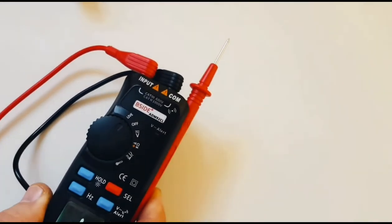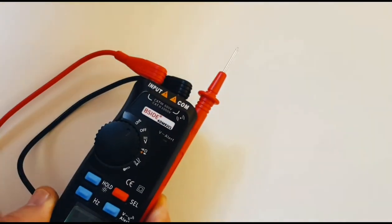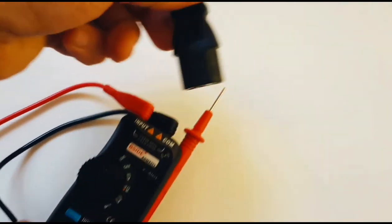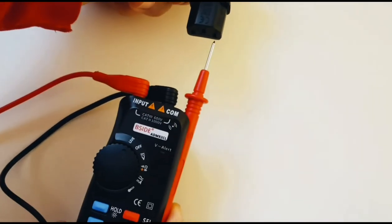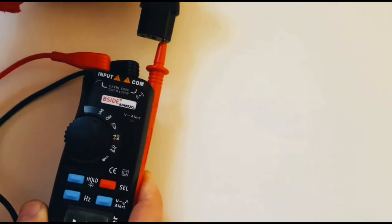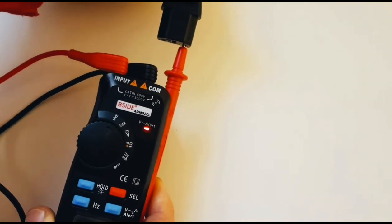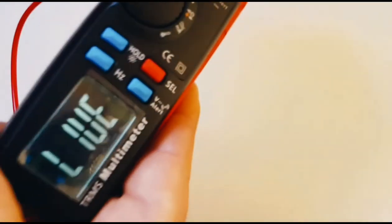Now the B-side also ships with something called live mode. So if we take a live power source, for instance, you want to verify if you indeed have power. Probe. And as you can see, it gives you an indicator that yes, there is a voltage alert. It is live.